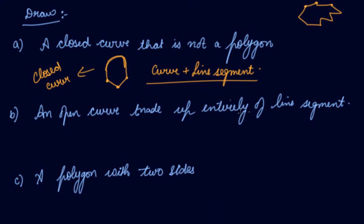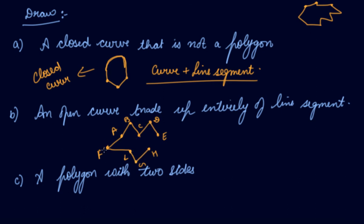An open curve made up entirely of line segments: you have to make an open curve entirely made of line segments — one, two, three, four, five, six, seven, eight line segments. So we have made figure A, B, C, D, E, F, G, and H with line segments ED, DC, CB, BA, AF, FL, LG, GH. But this is an open curve because it is not a closed figure — so this is an open curve made up entirely of line segments.